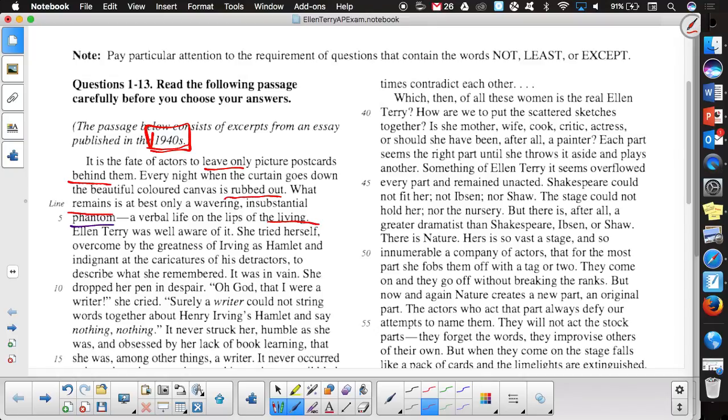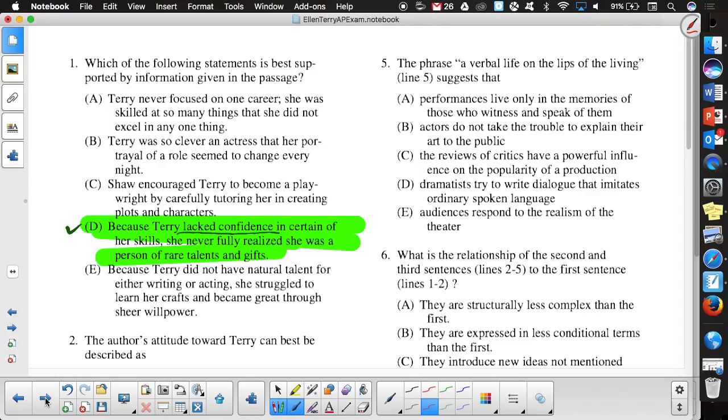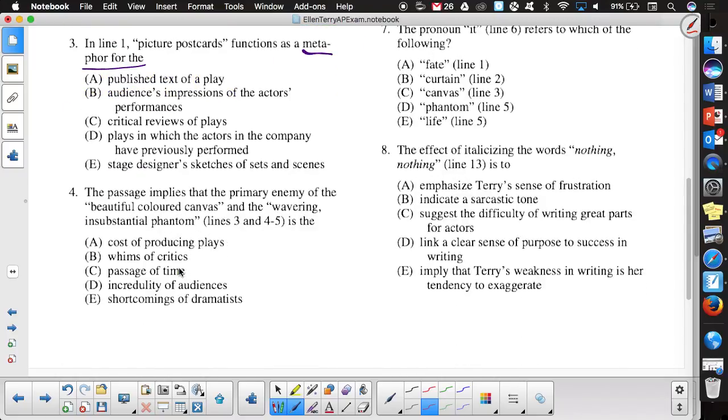Going on, what Aiden said about how they're all, it's like all different companies do, like, the same plays, like, the people playing the characters can, like, make the character into their own. And certainly a lot of actors, stage actors, actresses become famous for their portrayal of certain people, where they kind of own that character. But yeah, the curtain goes down. What remains is that insubstantial phantom, that verbal life on the lips of the living. It's certainly a temporary kind of thing.